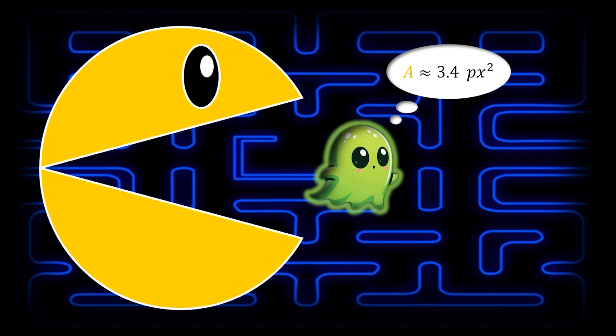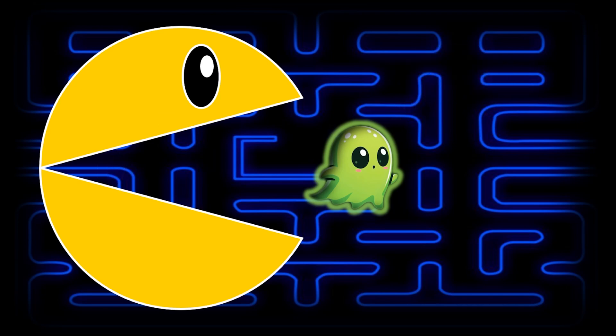Specifically, find the area as a function of the angle theta of the Pac-Man's mouth and the length of its jaws. As a quick tip, you'll need to use trigonometry to find this function. I hope you enjoyed this video — if you did, leave a like and subscribe to the channel for more content like this.